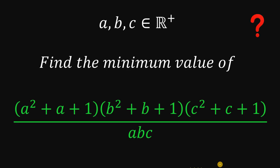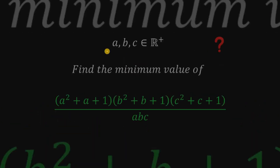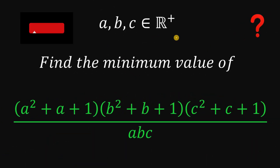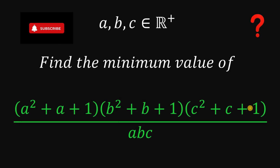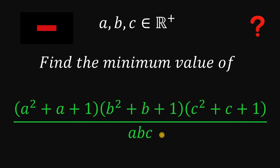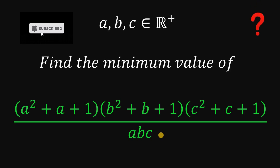Can you solve this math challenge? Here's the question. For some positive numbers A, B, and C, find the minimum value of (A squared plus A plus 1) times (B squared plus B plus 1) times (C squared plus C plus 1), all over A times B times C. Pause this video and see if you can answer this question, because I will show you the solution in 3, 2, 1.